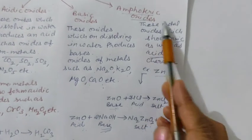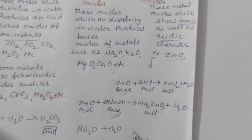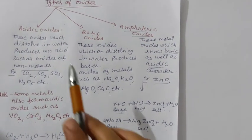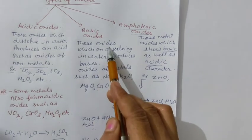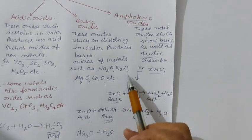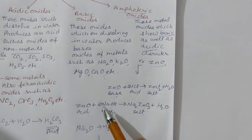So students, today we have discussed a small topic which is different types of oxides: acidic oxides, basic oxides, and amphoteric oxides with their examples and definitions as well as how they can be called acidic, basic, and amphoteric oxides.